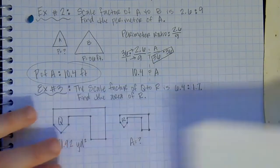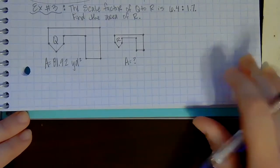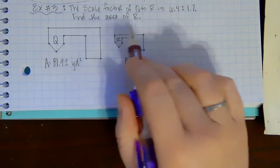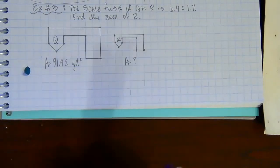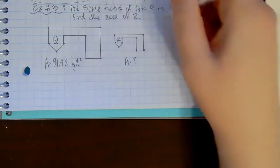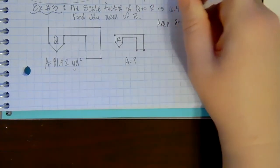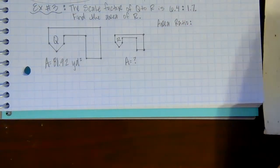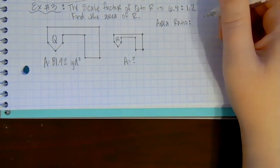Let's do one with area. So this one says the scale factor of Q to R is 6.4 to 1.7, and they want us to find the area of R. They give us the area of Q, but not the area of R. So first thing we need to do is write down our area ratio. Remember, area ratio is always squared.